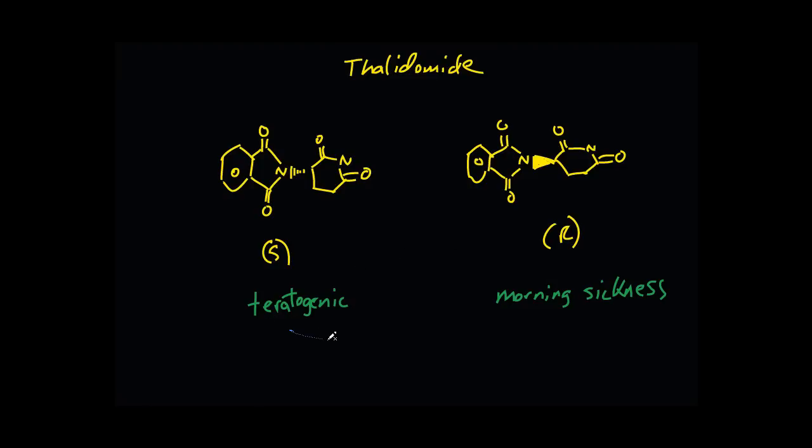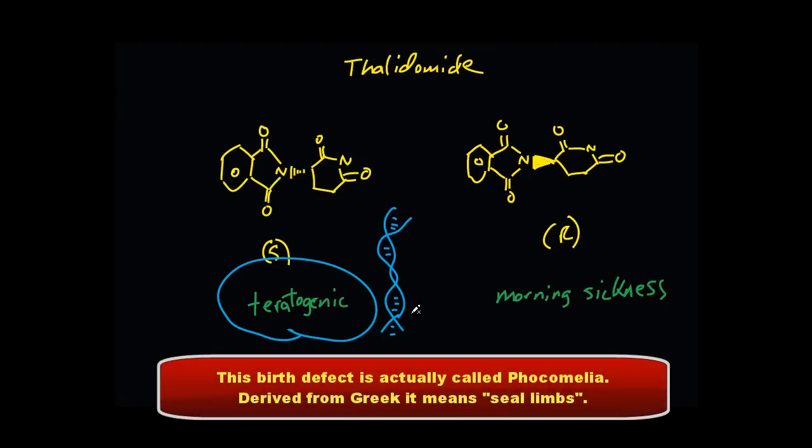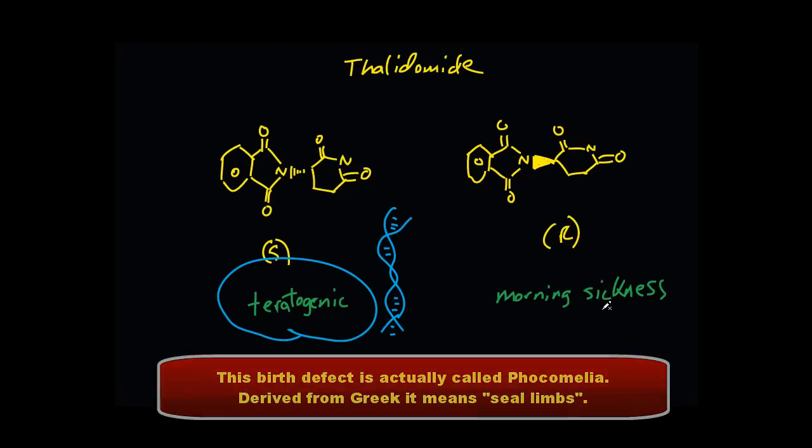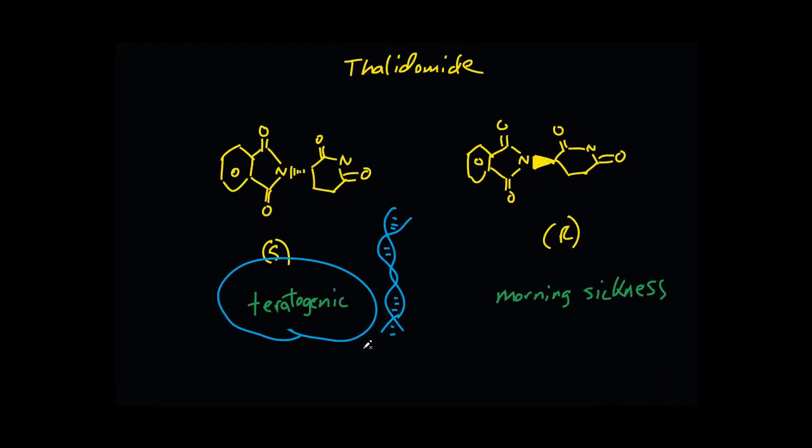So what they found was that this S isomer fit very nicely into the three-dimensional shape of the double helix in the DNA of the fetuses. And unfortunately, it found itself inside to cause mutation that led to, I don't really know what the technical term is, but the arms and the legs didn't grow all the way. And it kind of looks like a, almost like a stubby arm. But again, the point is that the reason why you have two very different effects is because even though S and the R isomers look very similar, when you're dealing with three-dimensional shapes, especially in terms of drug receptors, DNA, enzymes, and proteins, these guys can fit into these things in very different ways. Thank you very much.